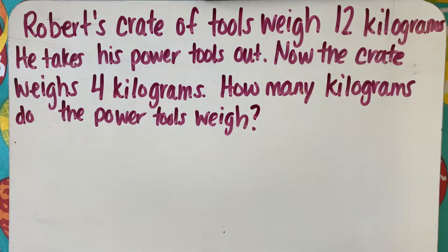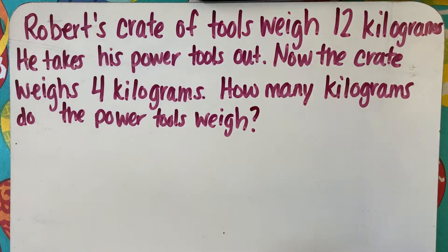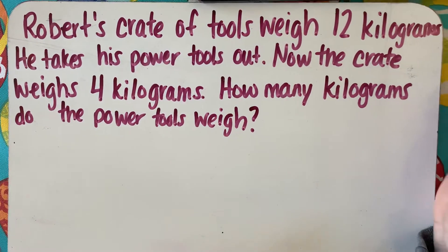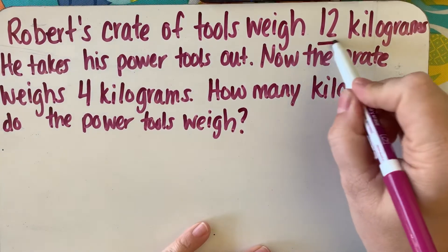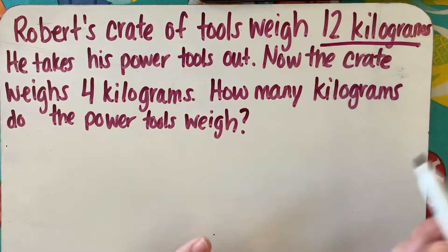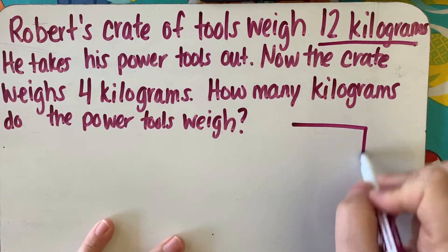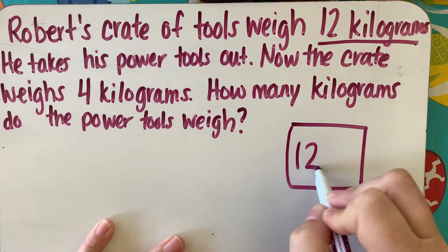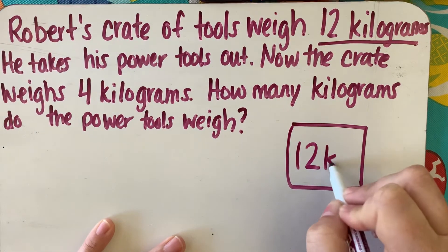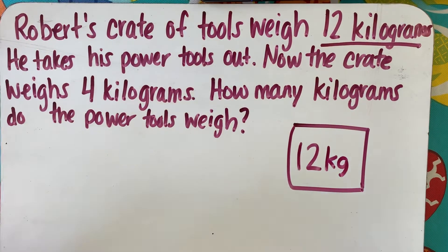I'm going to go back through and pull out some information. Robert's crate of tools weighs 12 kilograms, so the total weight of the crate is 12 kilograms. I'm going to do a little picture here — this whole thing is 12, and I'll abbreviate kg. That's the total weight of the crate.